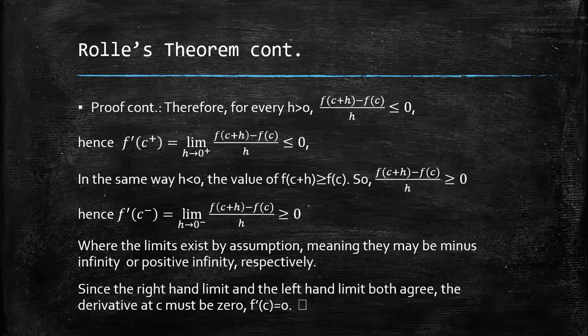In the same way, when h is less than zero, the value of f(c + h) is greater than or equal to f(c). So, [f(c + h) - f(c)]/h is greater than or equal to zero. Hence, f'(c) from the left-hand limit is equal to the limit as h approaches zero from the left-hand side of [f(c + h) - f(c)]/h, which is greater than or equal to zero. Where the limits exist by assumption, meaning they may be minus infinity or positive infinity, respectively.